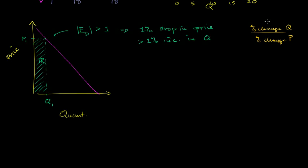If the absolute value of this is greater than 1, these move in opposite directions — that's why it would be negative. But if the absolute value is greater than 1, that means the quantity change is going to be larger than the price change. So if we have a 1% drop in price, the change in our quantity is going to be greater than 1%. If we lower the price by 1%, we increase quantity by more than 1%, so any reduction in our height will be more than made up for by an increase in our width.